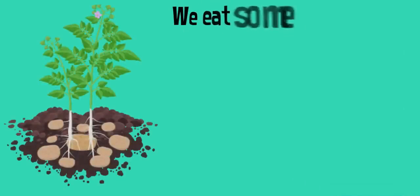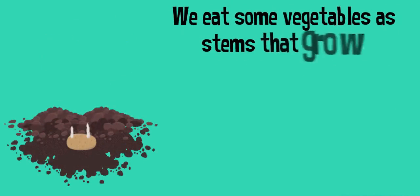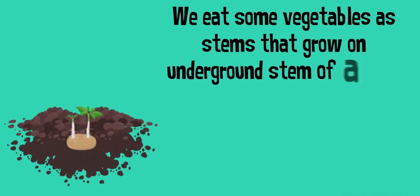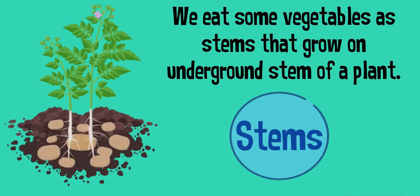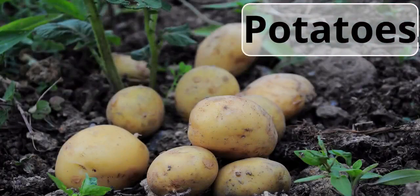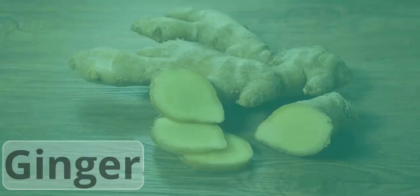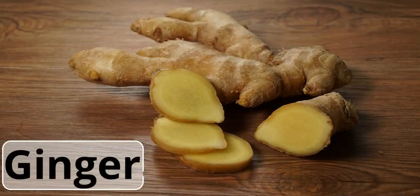We eat some vegetables as stems that grow on the underground stem of a plant. For example, potatoes and ginger.